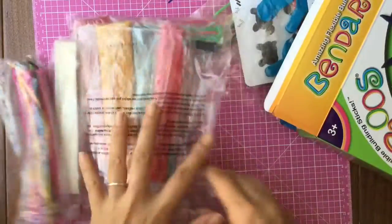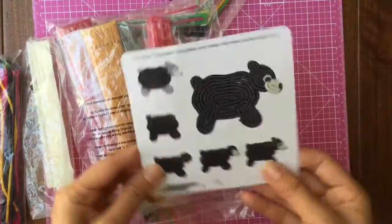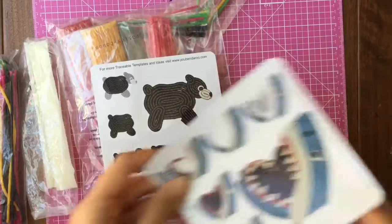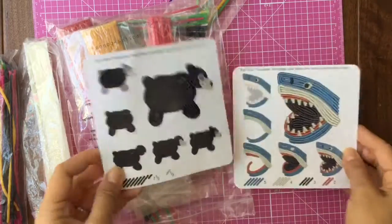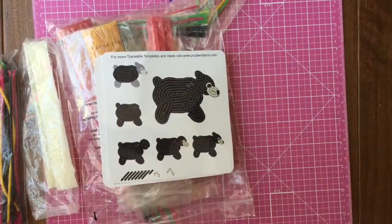Oh my goodness, look at all of these Benderoos and it comes with little templates on how to make each and every animal. Oh look, there's a shark and a black bear, what else is in here?